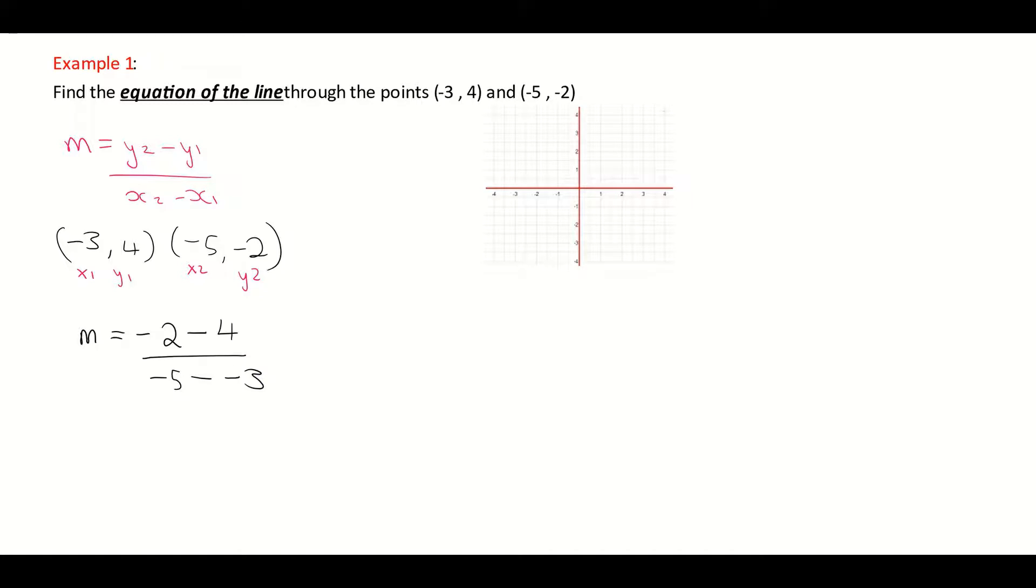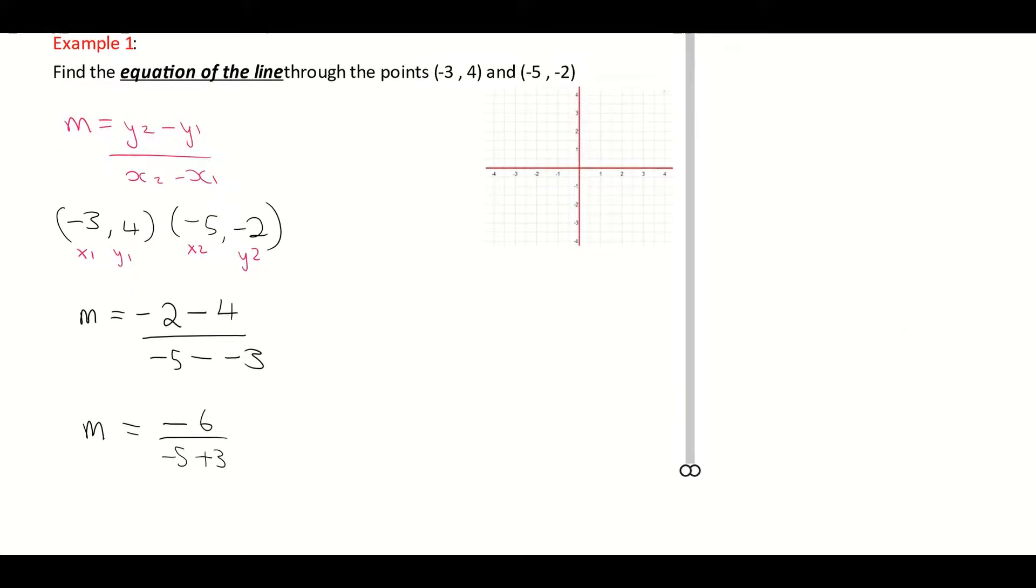Look at the separate video if you need to go into a little bit more depth on finding the slope. Then we are just going to work that out. So on the top of the fraction, minus 2 minus 4 is negative 6. And on the bottom, minus 5 minus minus 3 is becoming minus 5 plus 3, which is going to give me minus 6 over minus 2.